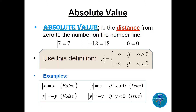Let me start by defining absolute value. Absolute value is simply the distance from zero to the number on the number line. The absolute value of 7 is 7, the absolute value of -18 is 18, and the absolute value of 0 is 0. The distance is the important part — it is always positive.